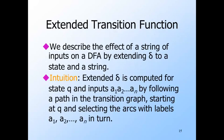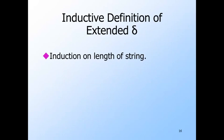The extended transition function delta takes a state q and a string w of any length — including zero — and tells us where the automaton gets to if it follows a path in the transition diagram from q, where the arcs are labeled by each of the symbols of w in order. That is, we look for the unique path from q whose labels form w. In some materials, you will see a hat over the delta to remind you it is the extended version. However, the extended delta agrees with the given delta when the string w is of length one — that is, a single symbol. Thus, there is not really a need to distinguish the extended and original deltas.